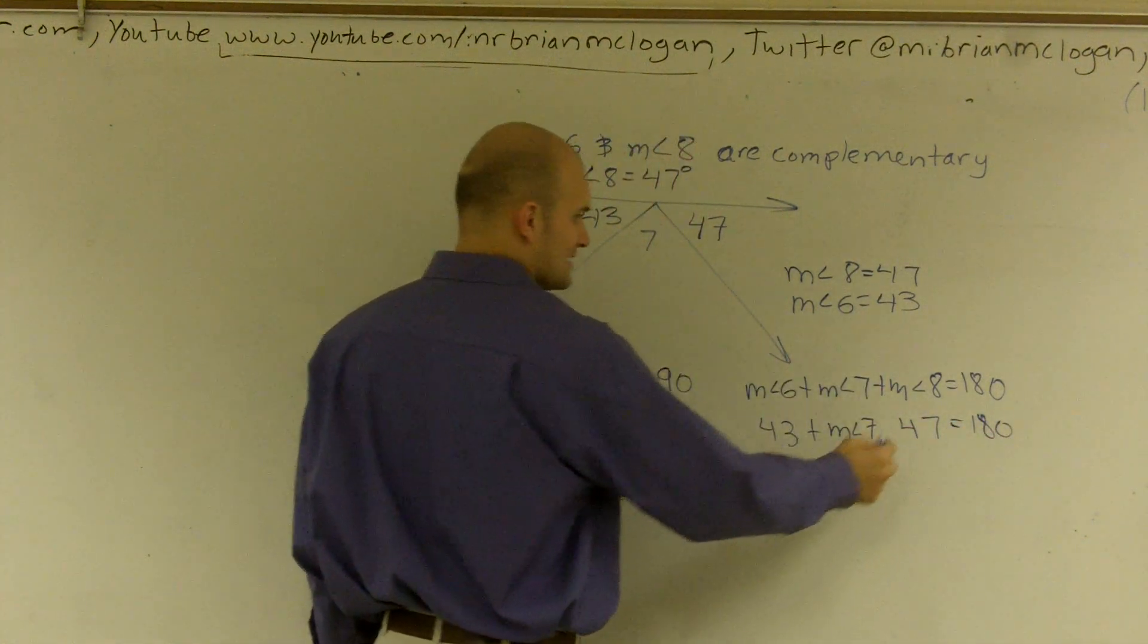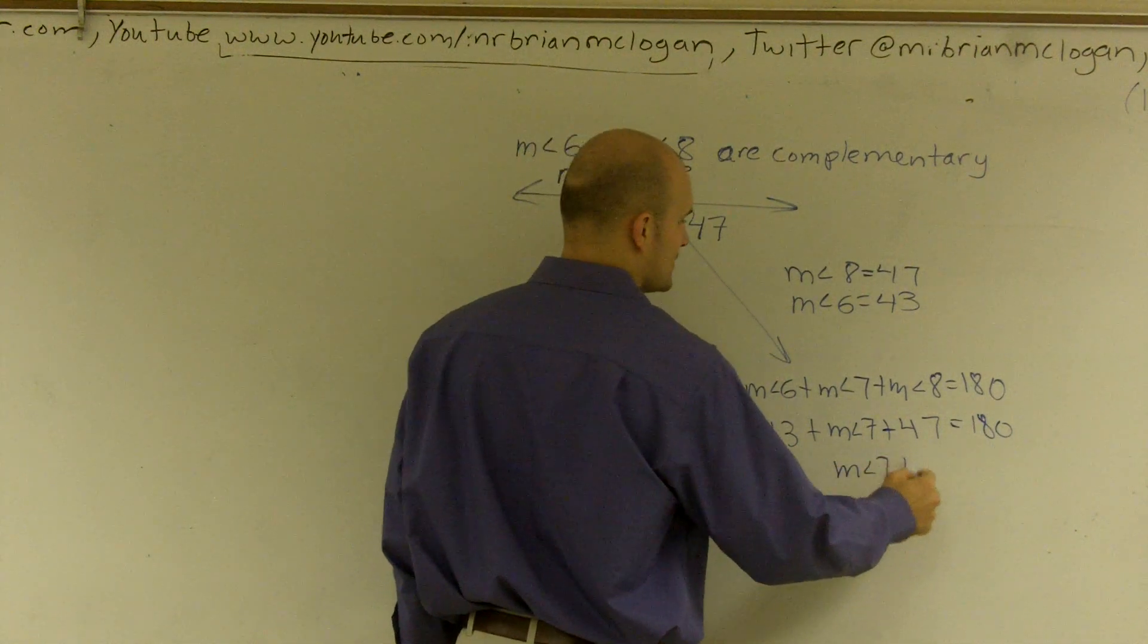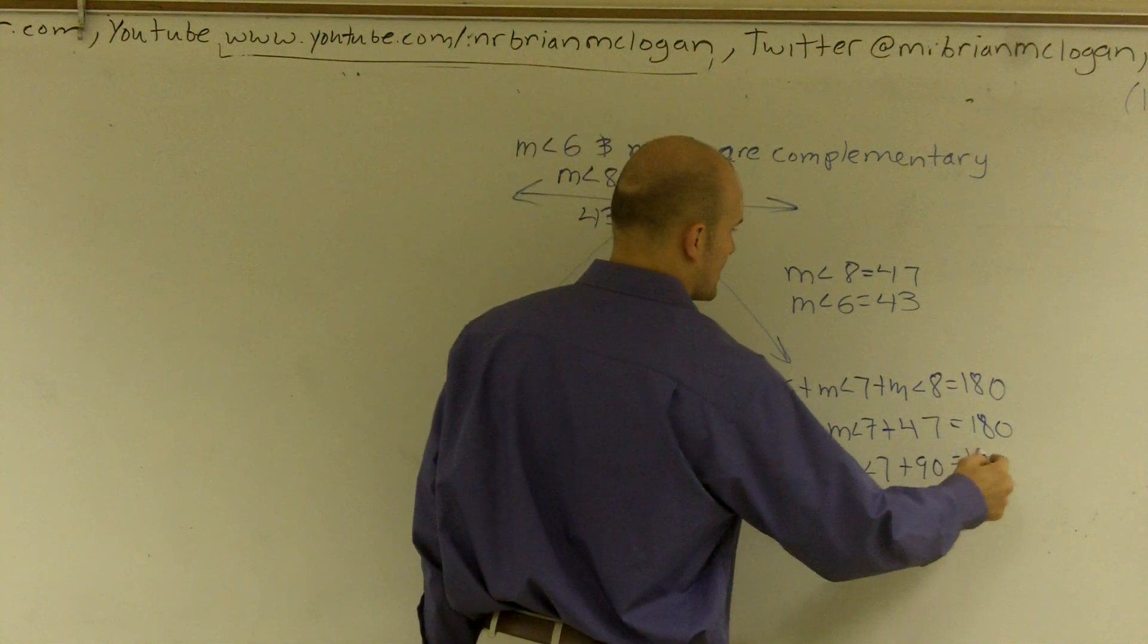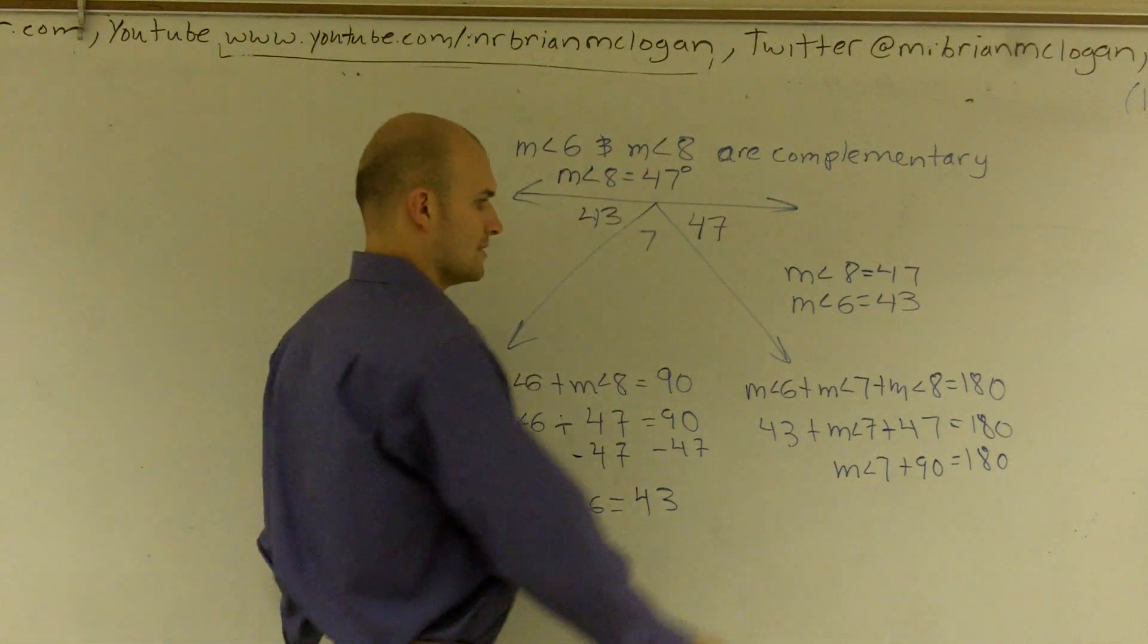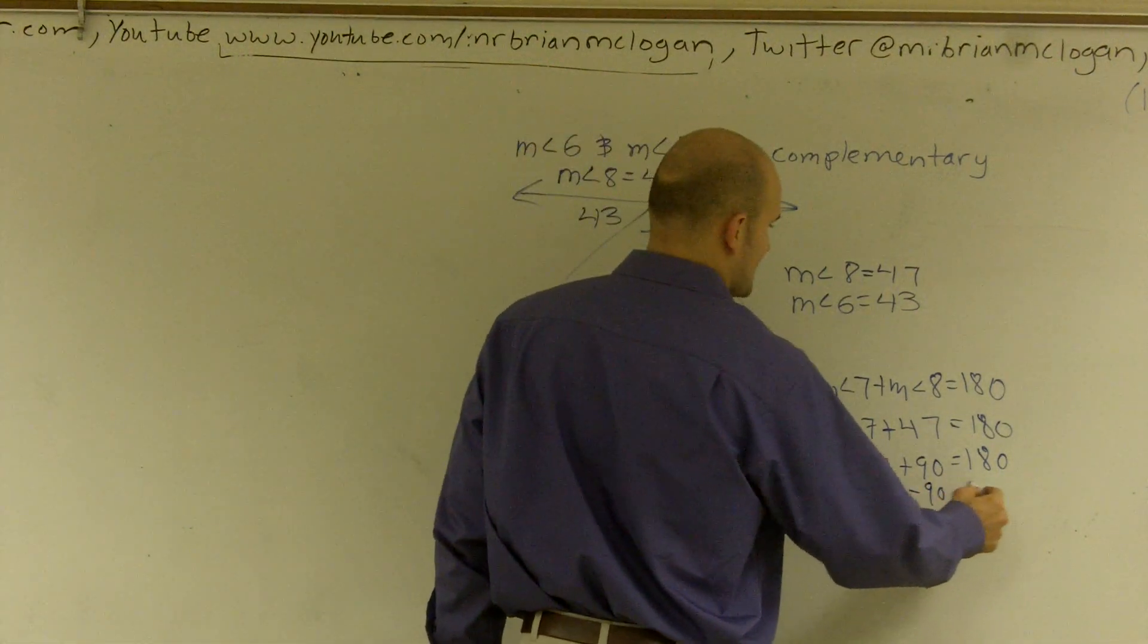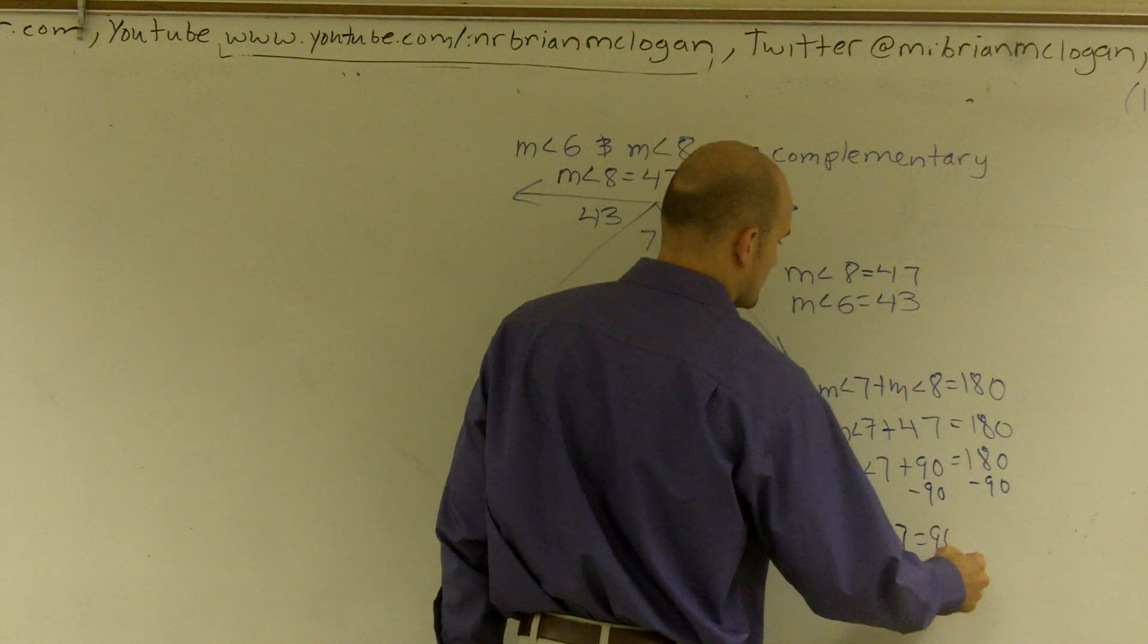I know that these two combined equals 90. So it's measure of angle 7 plus 90 equals 180, right? Because I said that these two angles add up to 90. Then I can subtract 90 and I get measure of angle 7 equals 90 degrees.